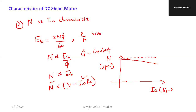We can mark the full load point on this characteristic. At full load, the load is 100%, meaning maximum current occurs. At that time, the speed will be slightly reduced. However, speed will be almost constant in the case of a DC shunt motor.